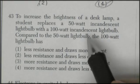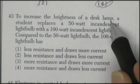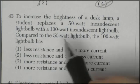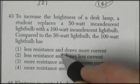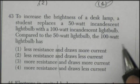43. This is an interesting question. To increase the brightness of a desk lamp, a student replaces the 50 watt with a 100 watt. Compared to the 50, the 100 watt wall has less or more resistance and it draws more or less current. So let's look at this.